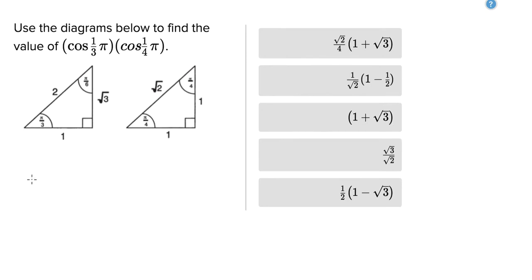So if we know SOHCAHTOA, where sine equals opposite over hypotenuse, cosine equals adjacent over hypotenuse, and tangent equals opposite over adjacent, where the hypotenuse is the longest side of the triangle, and the opposite side of an angle is the one across from it, and the adjacent is the one next to it, we can figure out the answer that way.